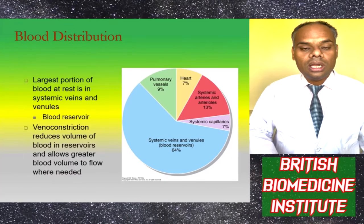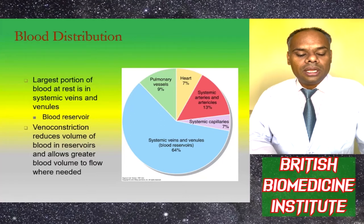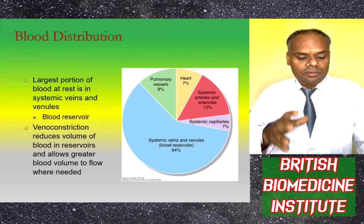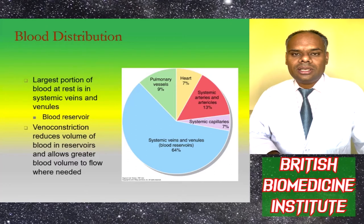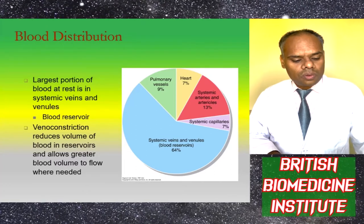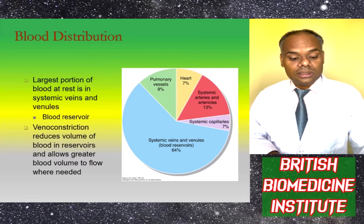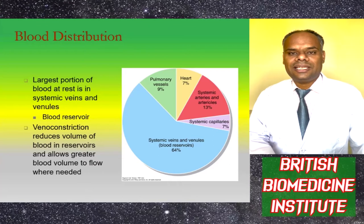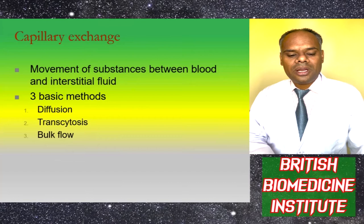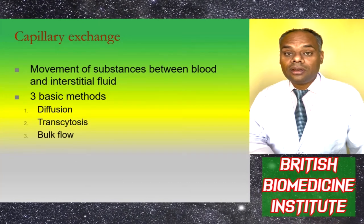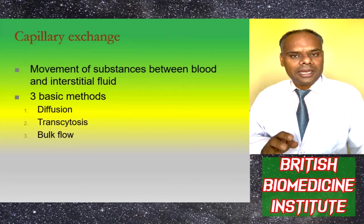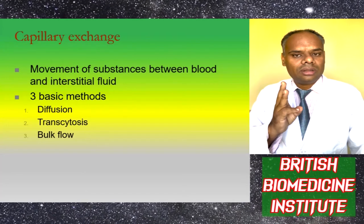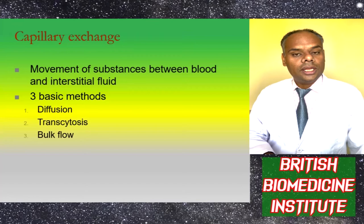The largest portion of blood at rest is in systemic veins and venules, which serve as a blood reservoir. Venoconstriction can reduce the volume of blood in this reservoir and allow greater blood volume to flow when needed. Capillary exchange is the movement of substances between blood and interstitial fluid, and there are three main methods: diffusion, transcytosis, and bulk flow.